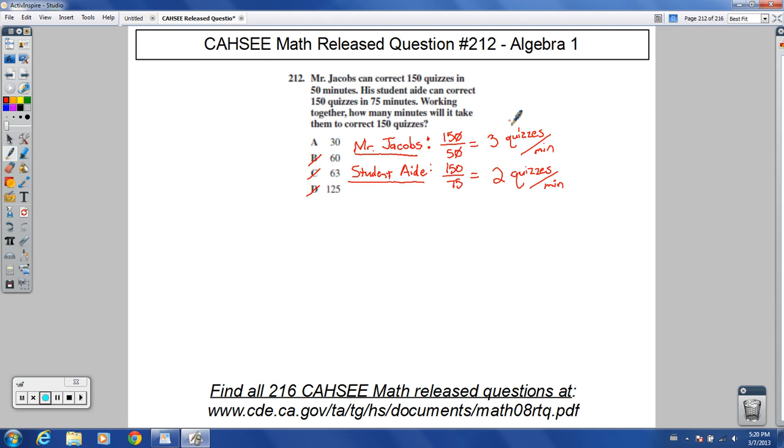Now, together, how many quizzes per minute will they be checking? That would be 5 quizzes each minute. This must be a very short quiz or easy one to check—maybe it's multiple choice or something like that. But together, they'd be doing 3 plus 2, which equals 5 quizzes per minute.